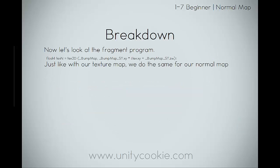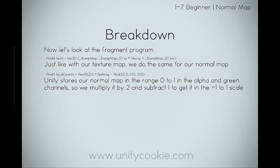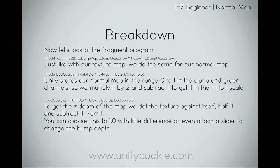In the fragment program, just like with our texture map, we sample the normal map using a tex2D sampler node to unwrap the texture over the coordinates. Unity stores the normal map in the range of 0 to 1 in the alpha and green channels, so we multiply it by 2 and subtract 1 to get it into the negative 1 to 1 scale. This allows the normal to bump in both positive and negative directions. For the Z depth, we dot product the texture against itself, halve it, and subtract it from 1 — this is the method from the Unity documentation and the Introduction to CG in Unity wiki book.